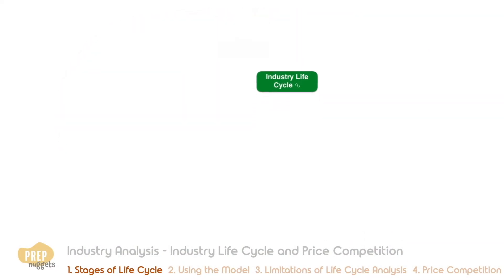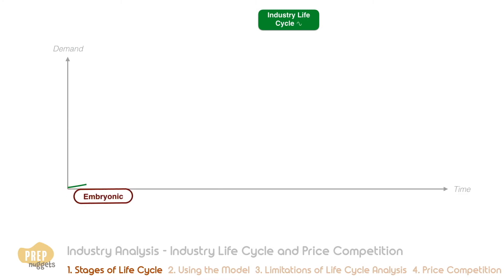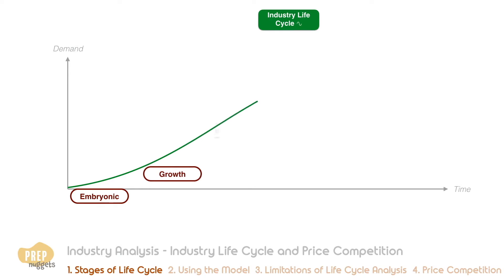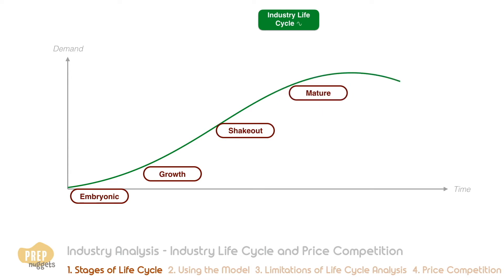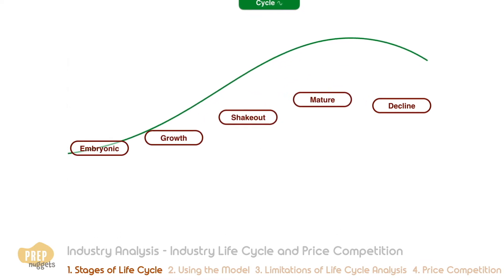An industry typically goes through five main stages: the embryonic stage where the industry has just started, the growth stage where industry growth is rapid, the shakeout stage where competition intensifies, the mature stage where growth stagnates and firms consolidate, and the decline stage where industry growth is negative. Let's go through each of these stages.